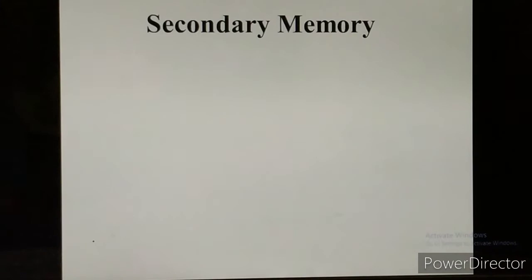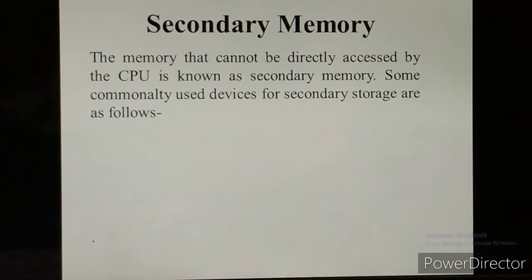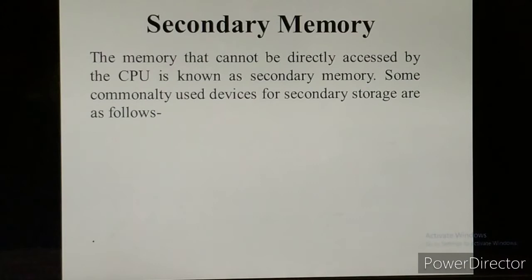Next is secondary memory. The memory that cannot be directly accessed by the CPU is known as secondary memory. It is also known as auxiliary memory, external memory, and backup memory. Primary memory is known as internal memory, but secondary memory is known as external memory because we can attach it from outside through a USB drive.